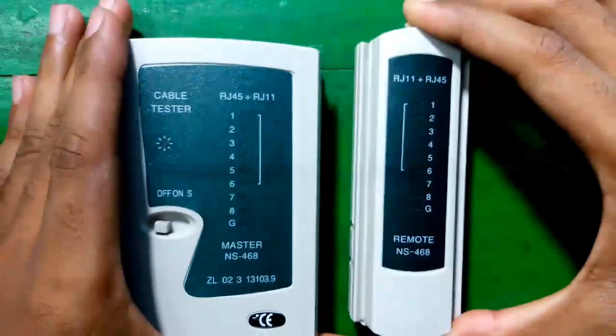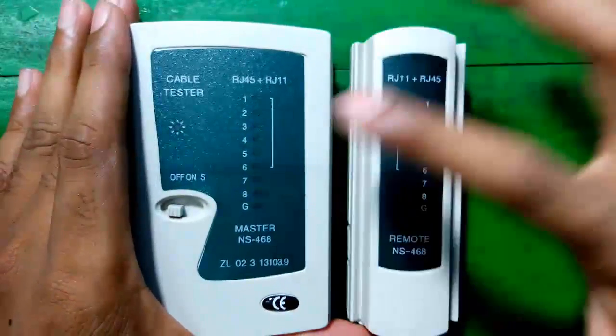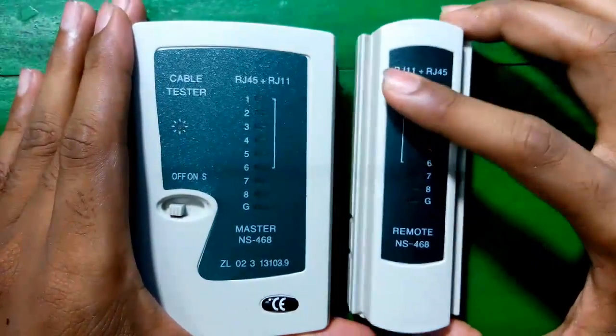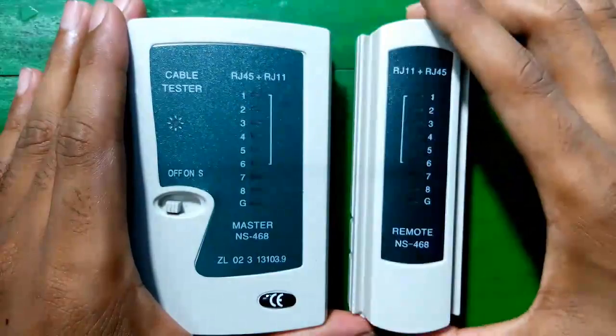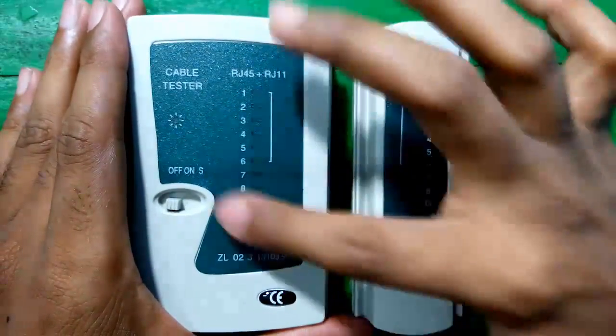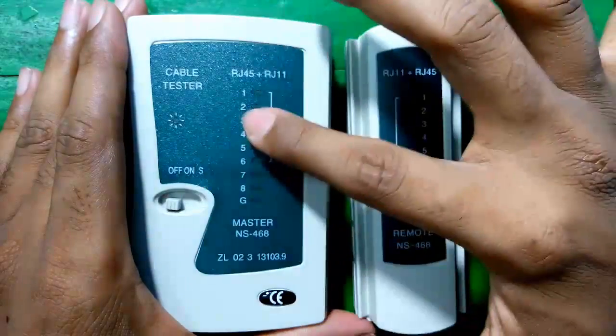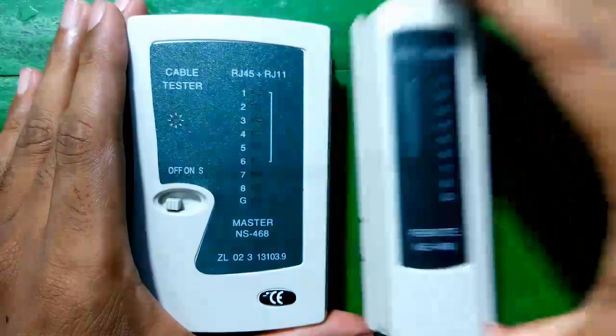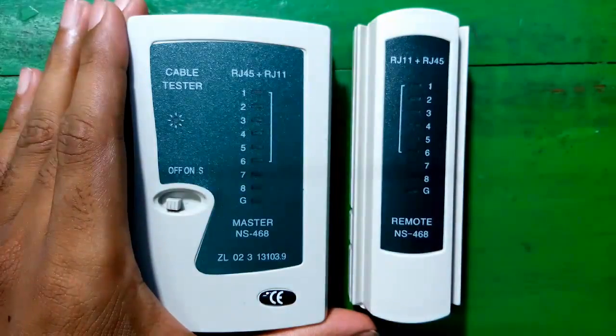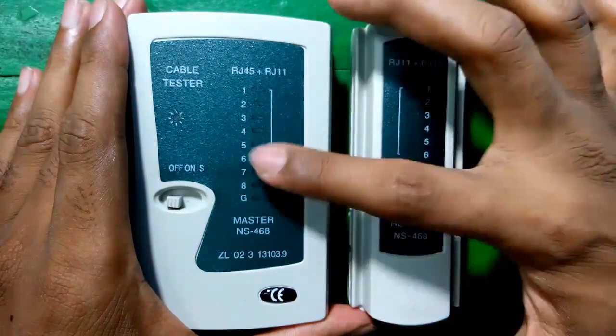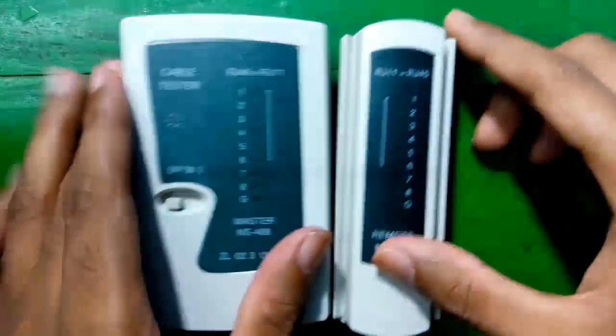First, it is useful for checking cables between two different positions or places. For example, if you are checking connectivity between two rooms, then the master you will keep with you and the remote can be in the other room for checking the connectivity.